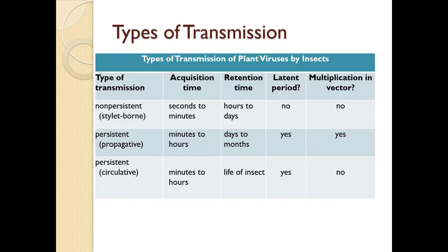To summarize transmission types: Non-persistent is stylet-borne, acquired in seconds to minutes, retained within the insect hours to days, no latent period, and does not multiply within the vector. Persistent propagative takes minutes to hours to acquire, retention time is days to months, there can be a latent period, and it does multiply within the vector. Persistent circulative takes minutes to hours to acquire, is retained for the life of the insect, has a latent period, but does not multiply within the vector.